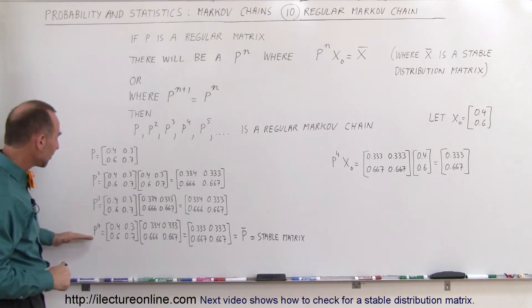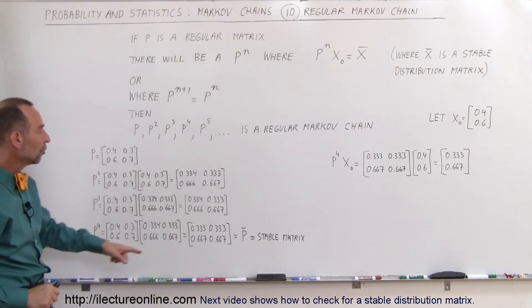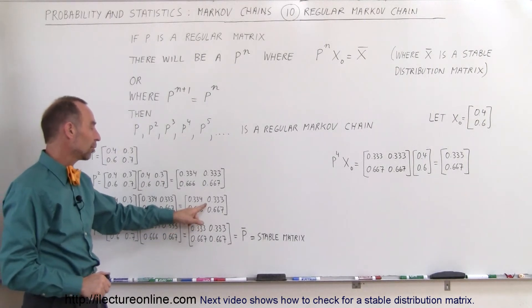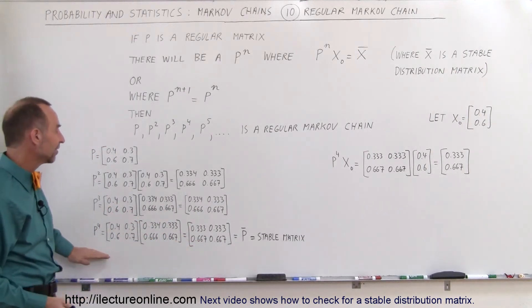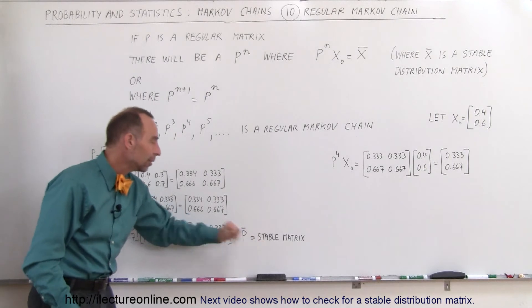If we do this four times to get to P to the fourth power, notice a very small change between P^3 and P^4. In other words, it has become stable. We can say that this is now a stable matrix.